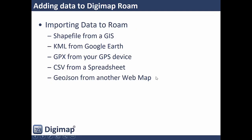You may have gone out and collected information using a GPS device or some digital device, or done a desk-based exercise in Google Earth capturing features from aerial imagery, and now want to add those things to Digimap Roam to access all its base maps without needing a GIS. You could have exported from a GIS, created a spreadsheet with eastings and northings or latitudes and longitudes, have GPX data from your GPS, or exported GeoJSON from a different web mapping interface — all of these can be uploaded into Digimap Roam.